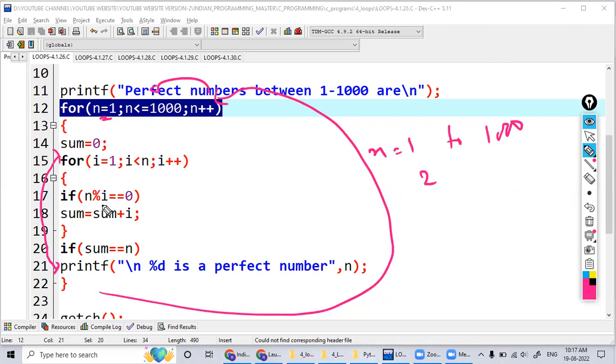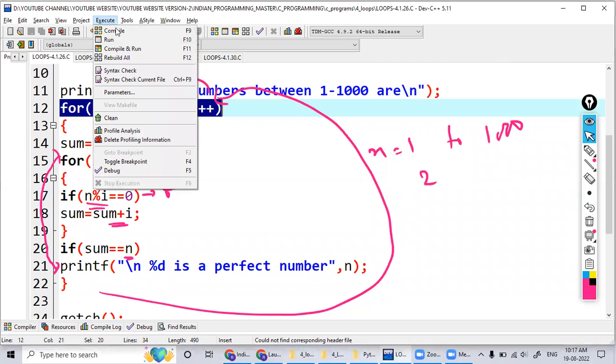Whenever it is a factor, I'm adding that number to the sum that I'm storing here. Let's see how many numbers, what are the different perfect numbers between 1 and 1000.